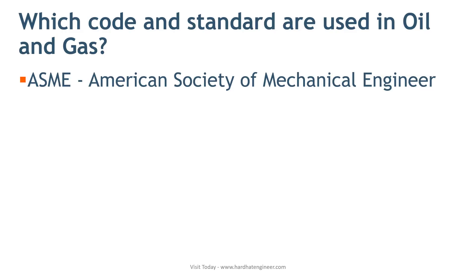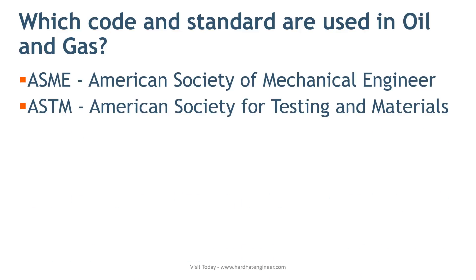First is ASME — the American Society of Mechanical Engineers. ASME publishes various design codes and dimensional standards that are used in refineries, petrochemical plants, and power plants. Next is ASTM — the American Society for Testing and Materials. ASTM publishes various materials standards that are used in almost all industries.